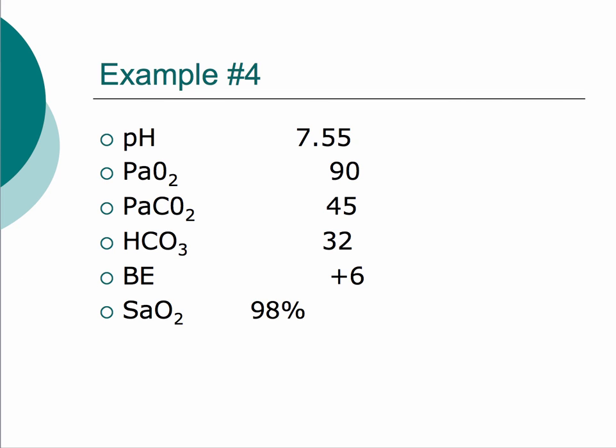Example four: pH 7.55, pCO2 45, PaO2 normal, bicarb 32, base excess plus 6. pH 7.55 is alkaline — alkalosis. pCO2 is 45, on the higher limit of normal, so it's not a respiratory problem. Bicarb is 32 — very elevated — and base excess is plus 6. The alkalosis is caused by the elevated metabolic component. The respiratory component is almost compensating but is still in normal range, so this is an uncompensated metabolic alkalosis. If the pCO2 were 46, you could strictly call it partially compensated.